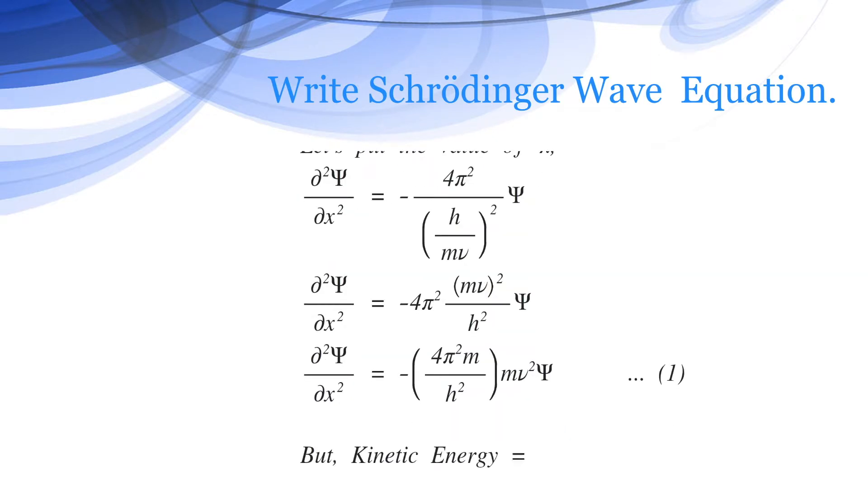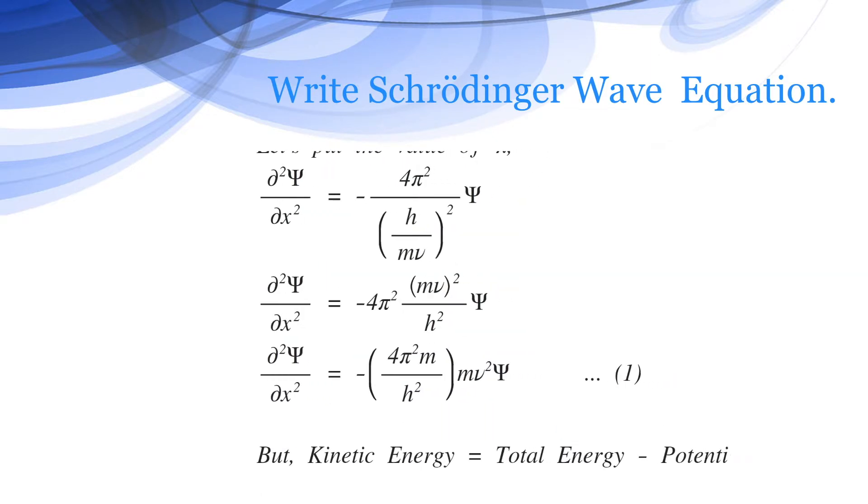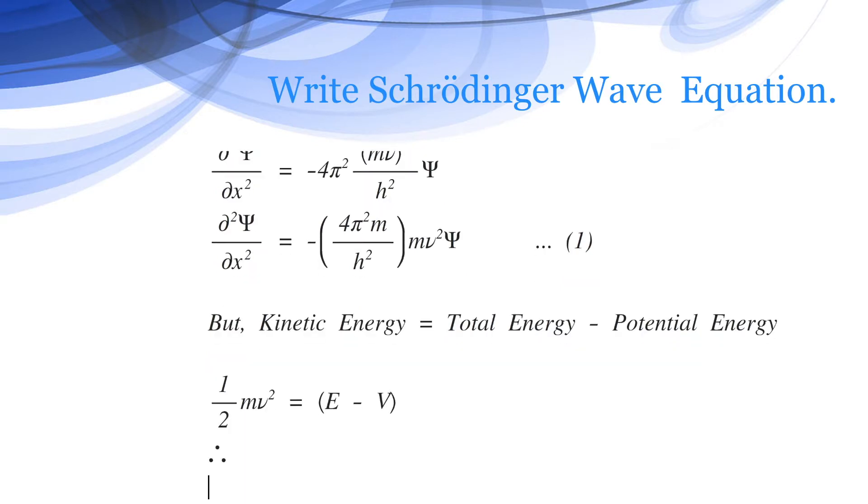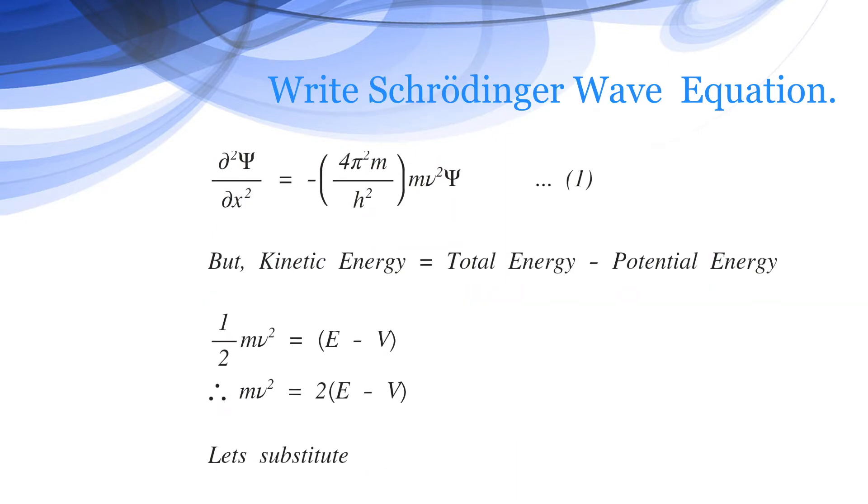But kinetic energy equals total energy minus potential energy. That is, half of mv square equals E minus V, where V is the potential energy and E is the total energy. Therefore, mv square equals 2 times E minus V. Let's put this value in equation number one.